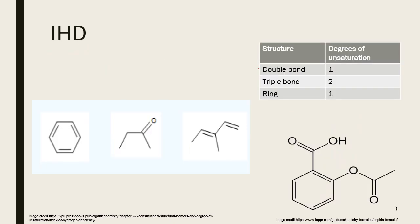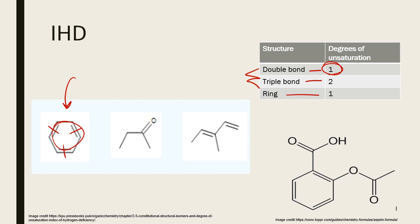In IHD, we have degrees of unsaturation depending on the features that remove hydrogens from the molecule. A double bond has a degree of one because I'm taking out one pair of hydrogens. Triple bonds take out two pairs, so the degree of unsaturation is two. Rings, kind of like double bonds, give a degree of unsaturation of one. So if I'm looking at this molecule with three double bonds, I have three degrees from those double bonds, plus one for the ring, giving a total IHD of four.